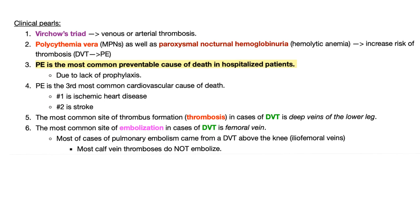Every point here is an exam question. Virchow's triad increases venous or arterial thrombosis risk — it's a triad of blood stasis, endothelial damage, and hypercoagulability. Polycythemia vera, a myeloproliferative neoplasm, can increase thrombosis risk. Paroxysmal nocturnal hemoglobinuria (PNH), a hemolytic anemia, can increase risk of DVT or PE.